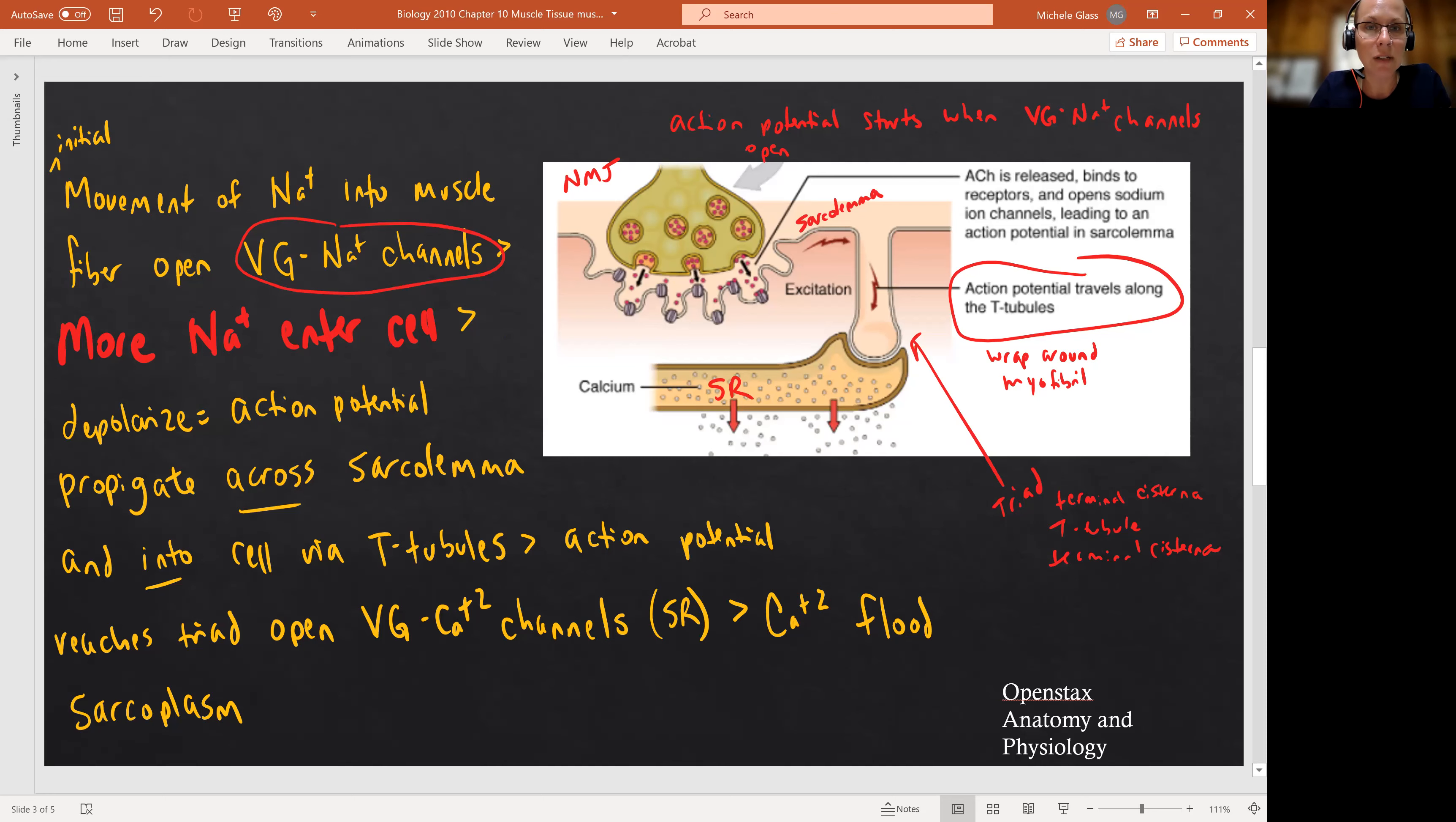So now we can say, okay, the action potential is traveling across the sarcolemma down into the middle of the cell through those T tubules, reaching that point we called the triad. The triad, remember, is where you have that sandwich of the T tubule in between two terminal cisternae. Terminal cisternae, remember, are the enlarged chambers of the sarcoplasmic reticulum holding the calcium. And so when the action potential reached the triad, that opens up a voltage gated calcium channel in the SR, releasing calcium into the sarcoplasm. So it's exactly where we left off.